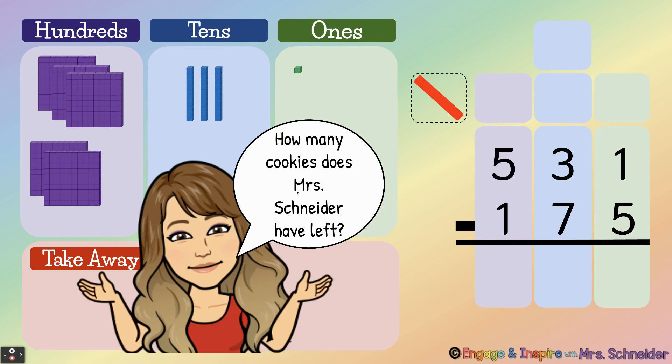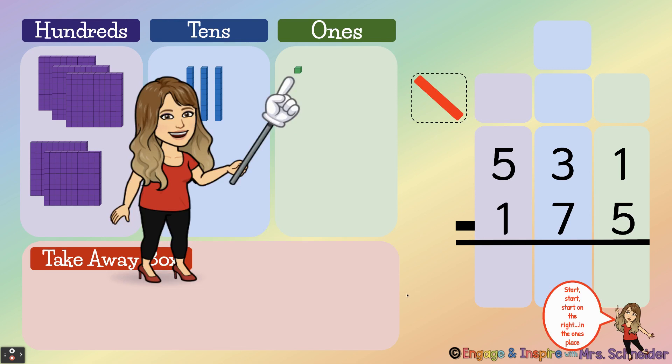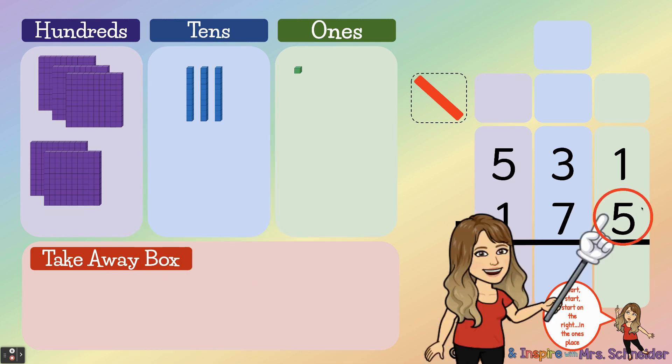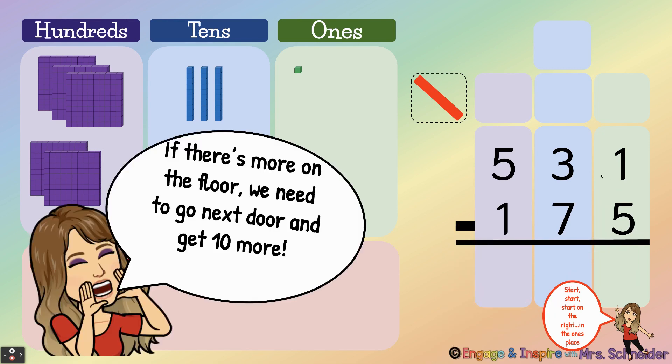How many cookies does Mrs. Schneider have left? That's what we're solving for. Okay, to solve this problem we always start on the right in the ones place and we're going to ask ourselves is there more on the top or more on the floor? Well, five is more than one, so there's more on the floor, and if there's more on the floor we're gonna go next door and get ten more.